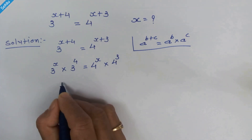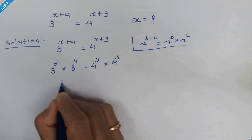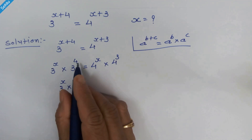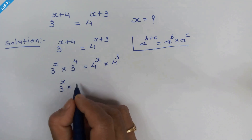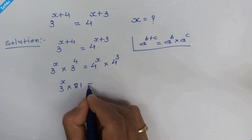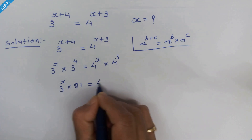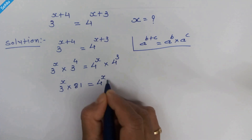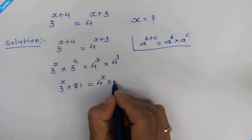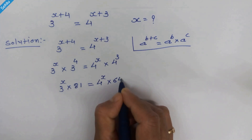Now we have 3 raised to x times 81 is equal to 4 raised to x times 64.